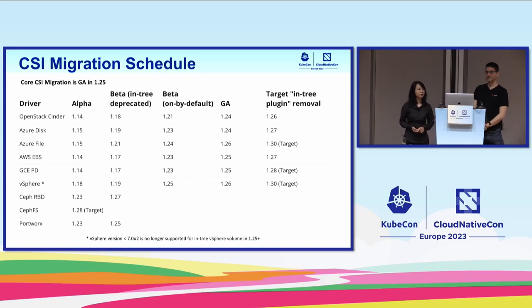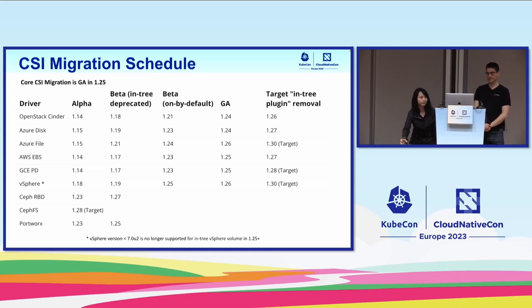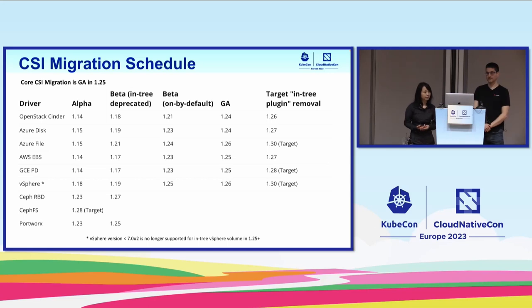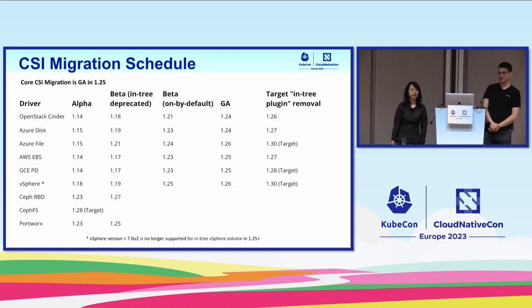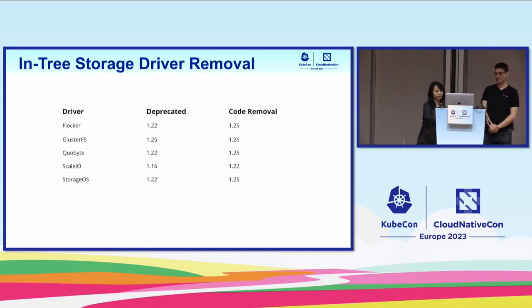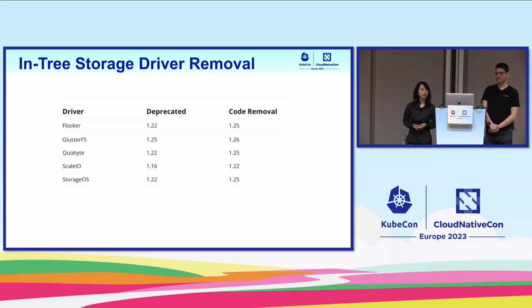CSI migration is a feature we've been working on for several releases. In 1.25, the CSI migration core feature moved to GA. Also OpenStack Cinder, Azure Disk and File, AWS EBS, GCE PD, and vSphere all moved to GA. A few in-tree plugins have already been removed, and some are targeted for removal in later releases. You can refer to the CSI migration status table for details. In 1.26, we removed the GlusterFS in-tree driver.